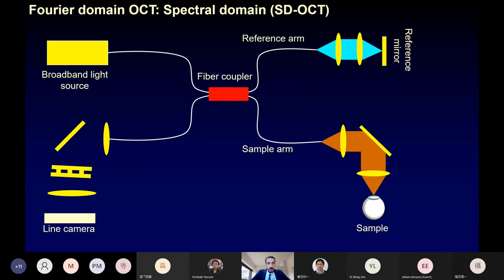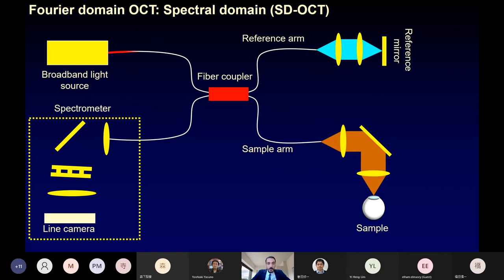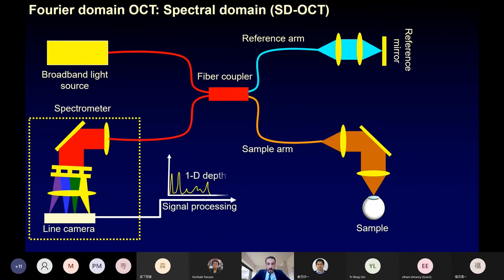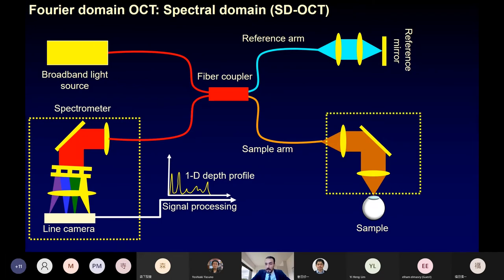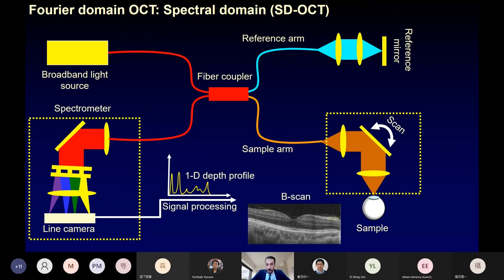Recent OCT devices are Fourier domain OCT, which has two variations. The first is spectral domain OCT, where the light source is a broadband light source and signal detection is done using a high-speed spectrometer. Light is split by a fiber coupler to the reference and sample arm, back-reflected from the reference mirror and the sample, recoupled at the fiber coupler, and the interference signal is detected. By signal analysis, a one-dimensional depth profile is obtained, and by scanning with a mirror in the sample arm, a two-dimensional structural image — called an OCT B-scan — is produced.